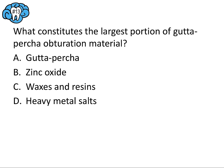Question number thirteen: What constitutes the largest portion of gutta-percha obturation material? This is a straight high-yield fact recall question. The main ingredient in gutta-percha points is actually not gutta-percha — the naturally occurring thermoplastic agent — but rather zinc oxide, which is the filler used in gutta-percha and the sealer. The answer is B. Beware of that trap answer.